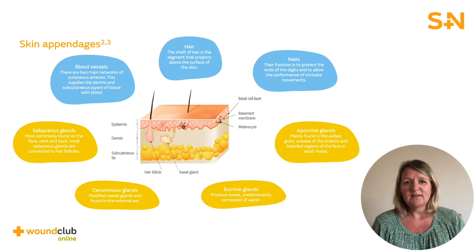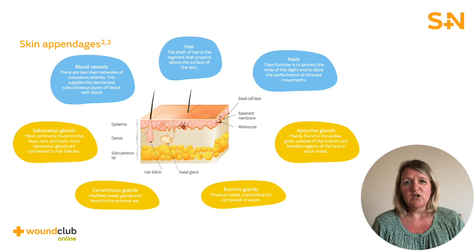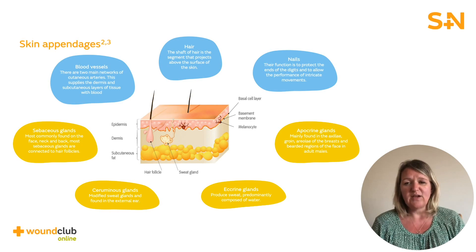Sweat glands have an important role in thermoregulation through evaporation. Apocrine glands are not active during childhood and are activated during puberty. These are our scent-releasing glands, mainly found in the axilla, groin, areola of the breast and bearded regions of the face in adult males.